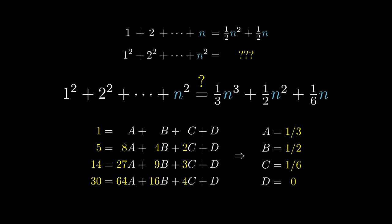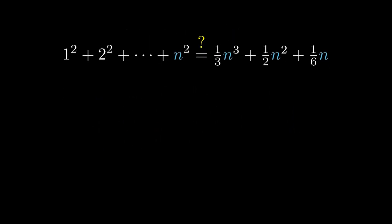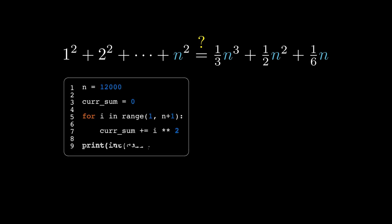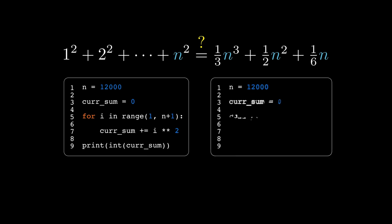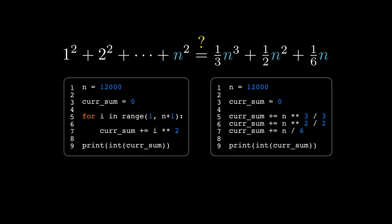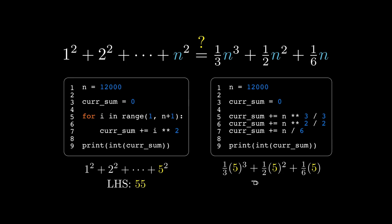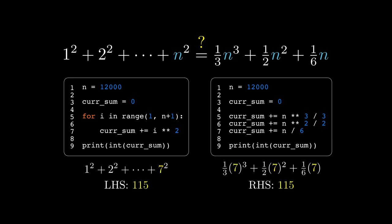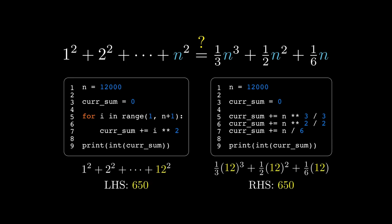But how do we know that this pattern actually continues? On the left side, we're going to manually add up the squares. And on the right side, we're going to use the formula to calculate what we think is the sum of the squares. Let's test it out for the sum of the first 5 squares. On the left side, our answer is 55. On the right side, our answer is 55 as well. If we calculate the sum of the first 6 squares, both sides add up to 91. If we calculate the sum of the first 7 squares, both sides add up to 140. And adding number after number, both sides seem to equal each other.